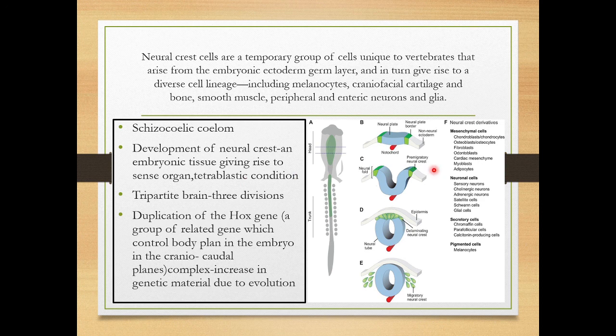Normally three layers are present: endoderm, mesoderm, and ectoderm. There is an additional layer of nervous cells called the neural crest, from which different types of organs are formed.